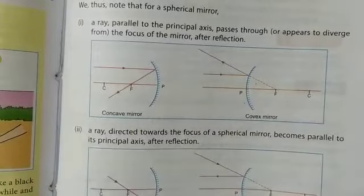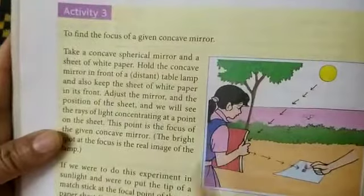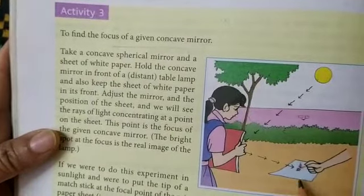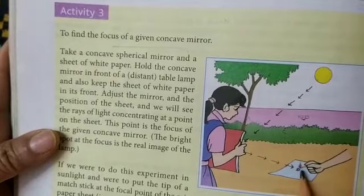On the basis of this, we had done Activity 3, which is very important: to find the focus of a given concave mirror. You have to take the paper and put the lens on top at a particular point.